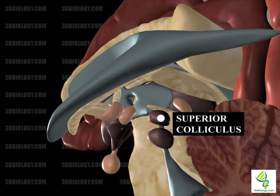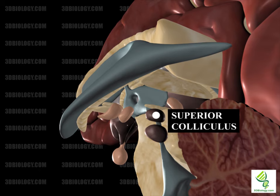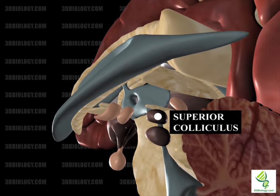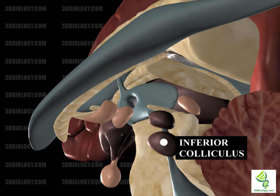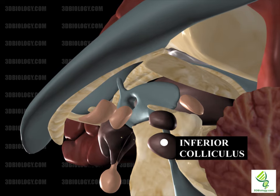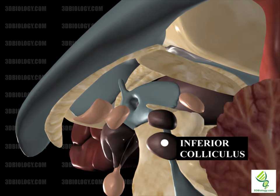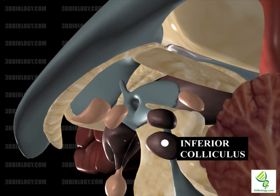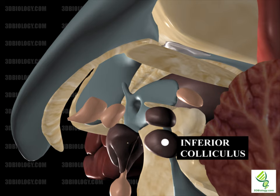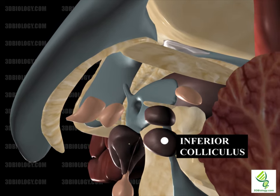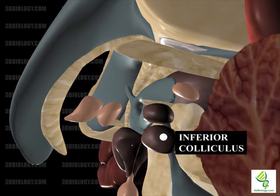The superior colliculus can be found on top of the midbrain and is a paired, multisensory structure. Some of its functions include directing eye movement, head turns, and shifts in attention. The inferior colliculus is located over the trochlear nerve and below the superior colliculus. It is a large main nucleus of the auditory pathway in the midbrain where auditory pathways converge. It also functions in spatial localization through hearing as well as an integration station and switchboard. Its inputs include the auditory cortex and brainstem nuclei. The name inferior colliculus means 'lower hill.'